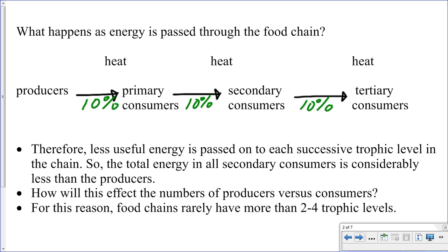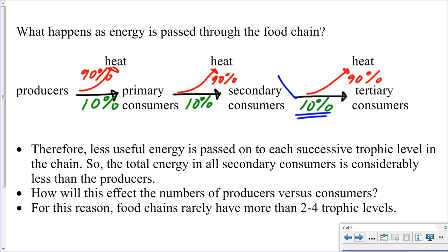What happens to the remainder? Well, the majority of it — ninety percent — is not passed on but is released in the form of heat. Ninety percent is released as heat at each stage. This is an average; the range is usually somewhere between five percent and twenty percent, but ten percent is what we usually use for the energy passed on. This is sometimes referred to as the rule of ten. When you see that term, it is referring to the ten percent of the energy from one trophic level that is passed on to the next.